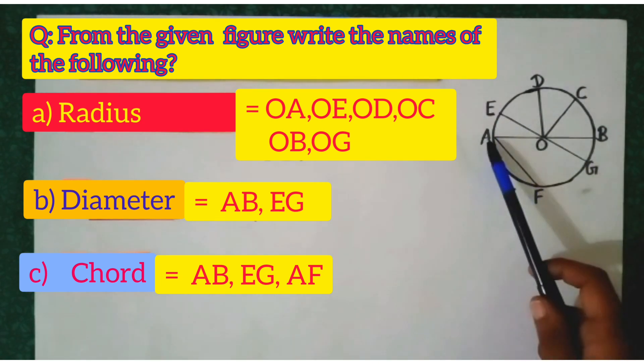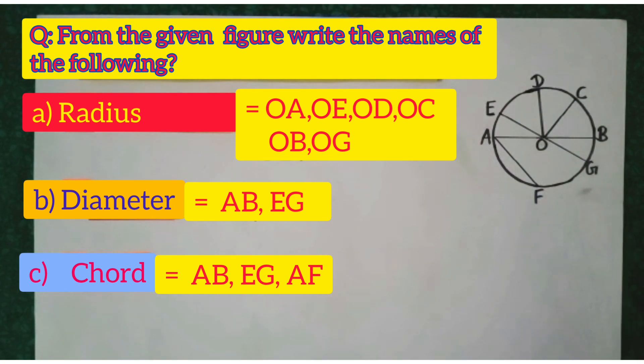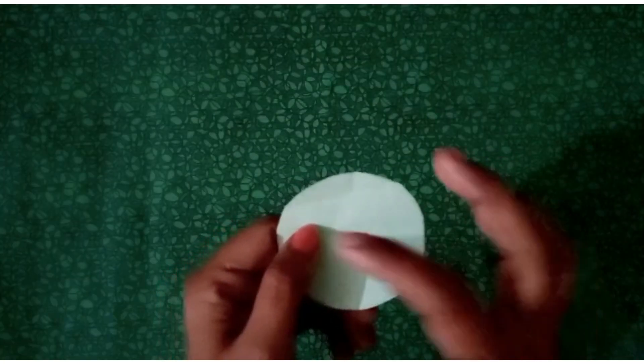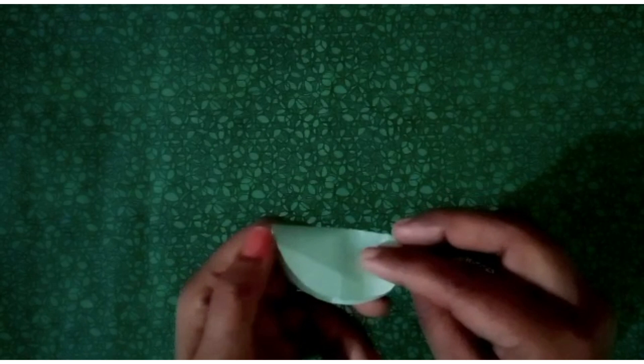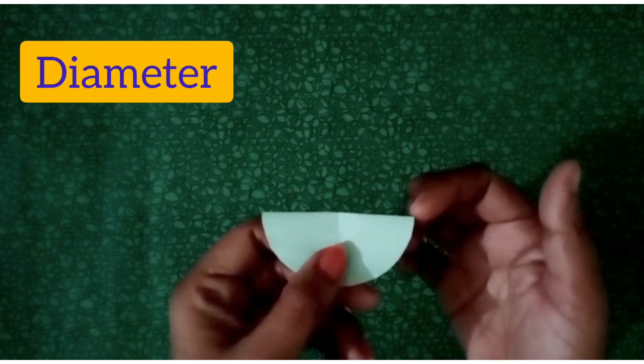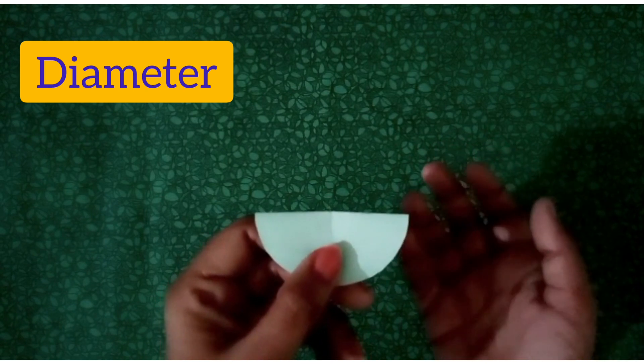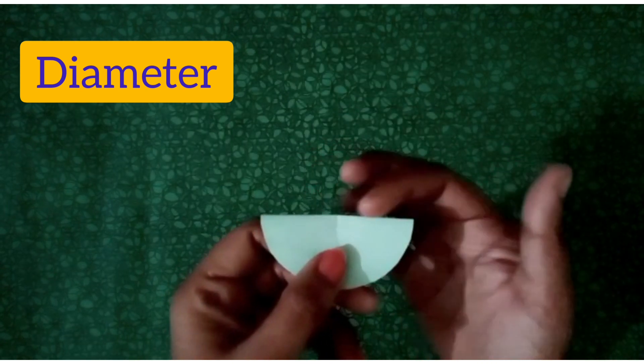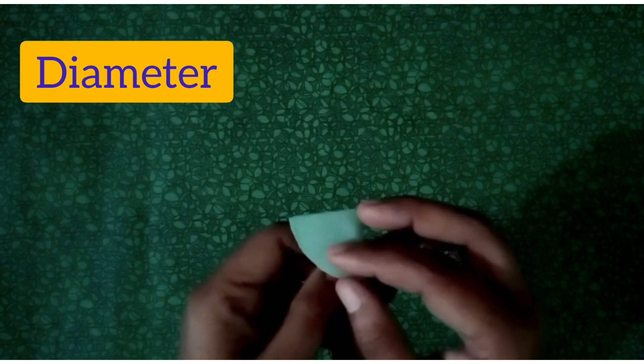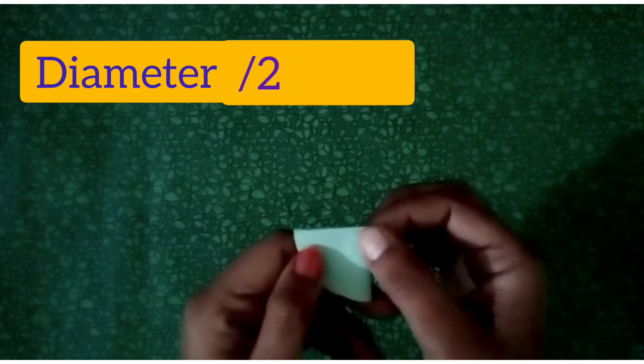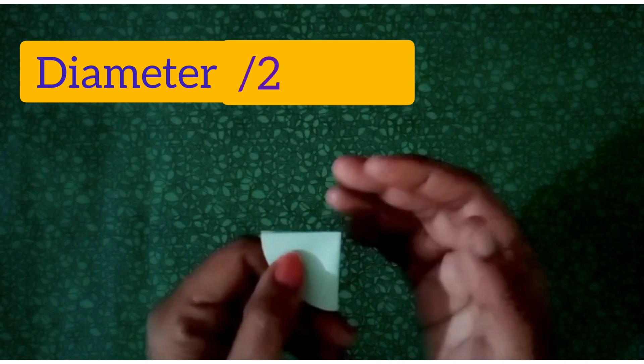Students, on folding this circular piece of paper like this, we get diameter. And for radius, we will fold it again from the middle. It means diameter divided by 2. So what will we get? We will get radius.